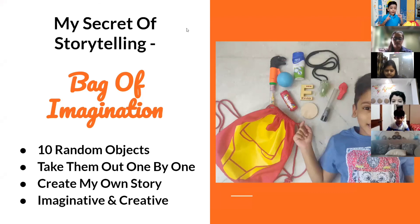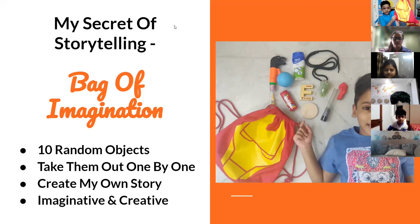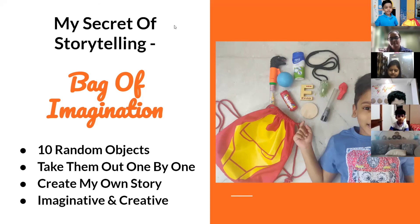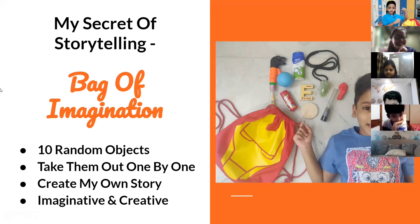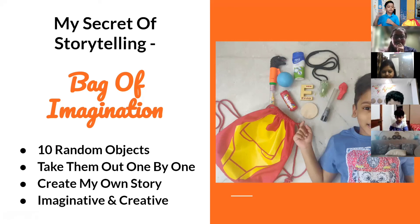Now let me tell you my secret of storytelling, which is my bag of imagination. It has 10 random objects. As you can see in the picture, there are 10 random objects and I take them out one by one — and that's how I create my own story, which is imaginative and creative.